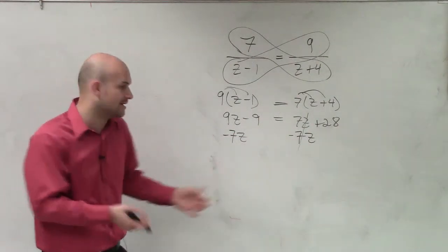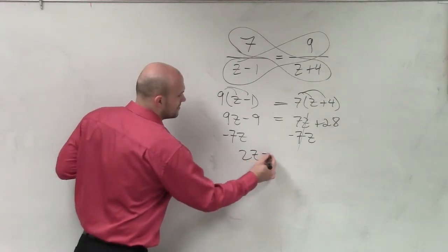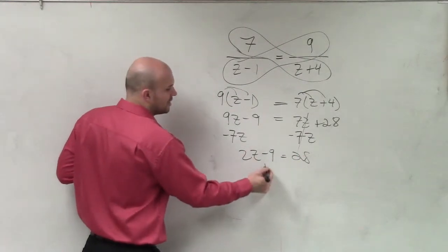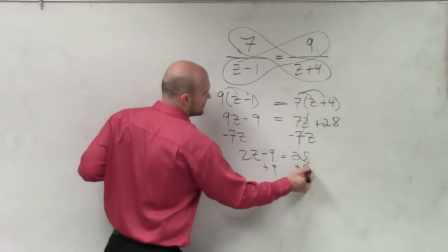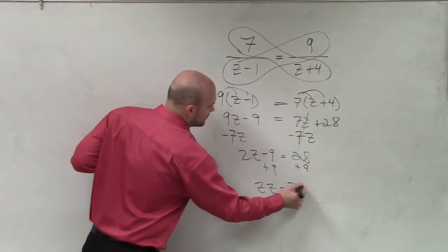You could put them on the right side if you'd like. In this case, now I have 2z minus 9 equals 28. Now, it's a two-step equation to solve. I'll add the 9. And I have 2z equals 37.